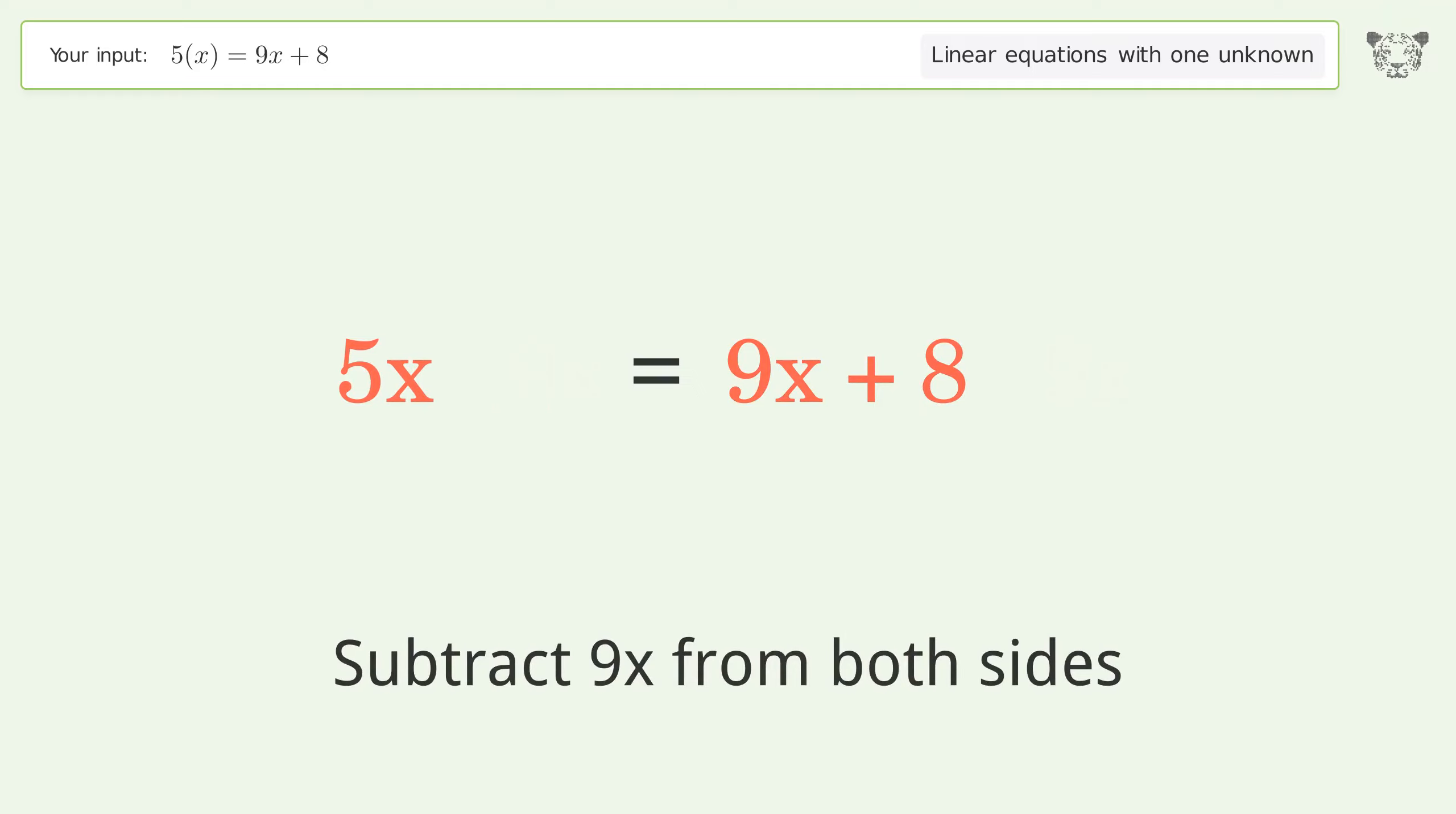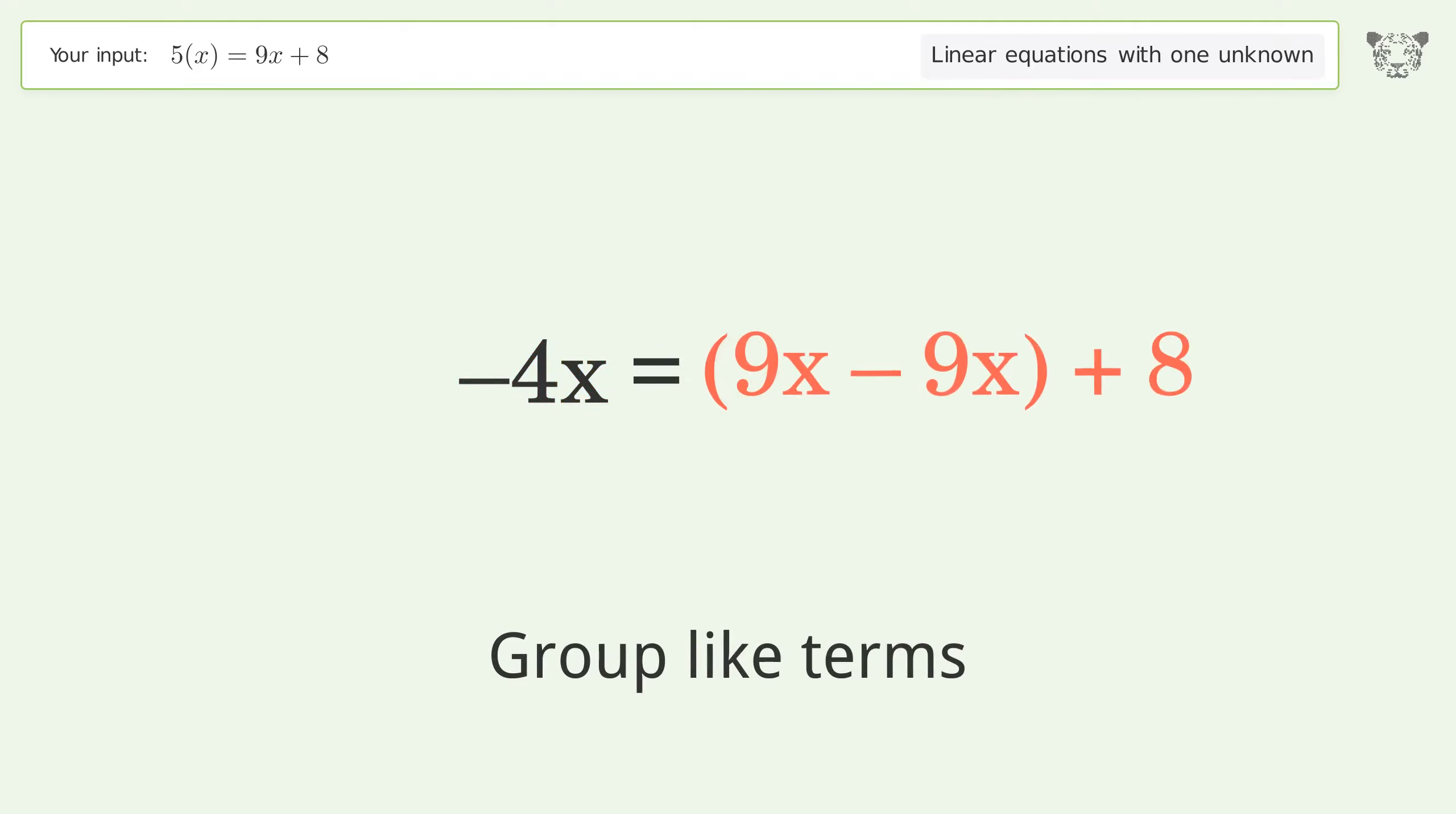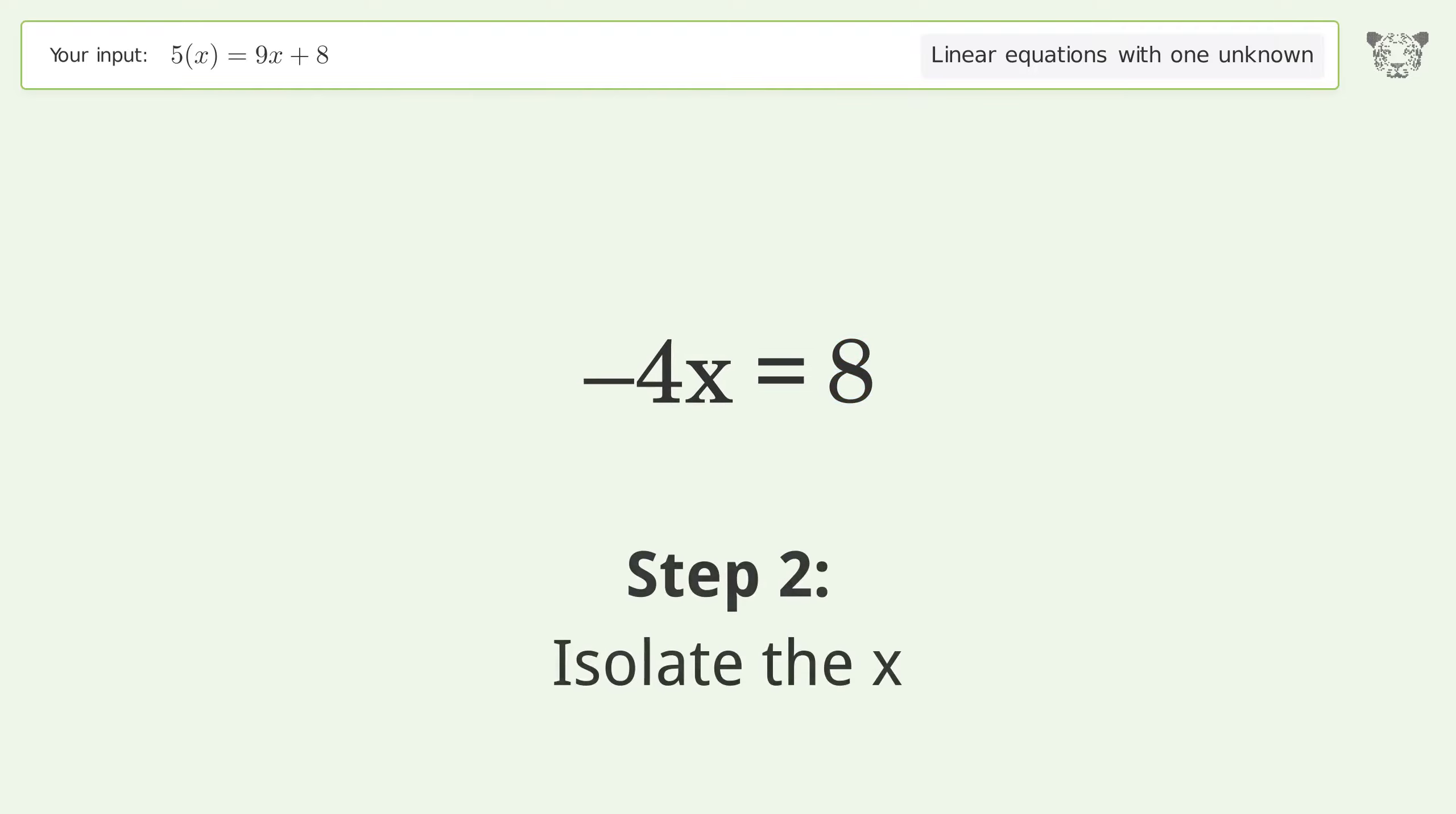Simplify the arithmetic. Group like terms. Simplify the arithmetic. Isolate the x. Divide both sides by negative 4.